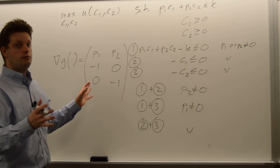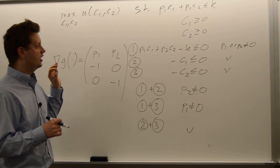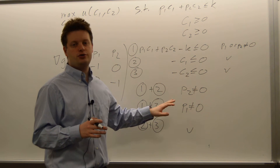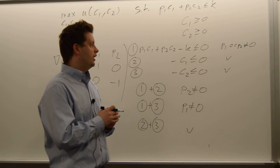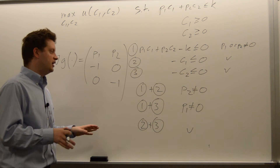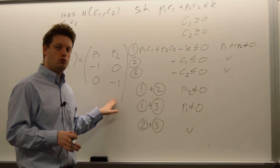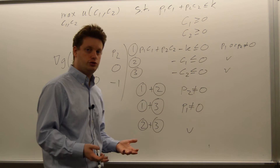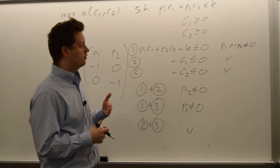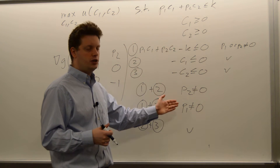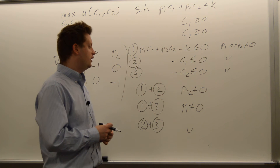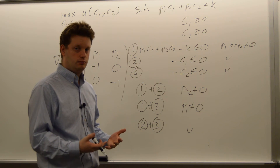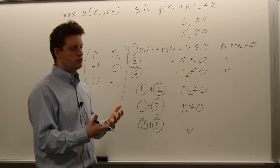Summing up, the constraint qualification holds if neither p1 nor p2 is equal to 0 — those are the only restrictions needed. If the constraint qualification does not hold, for example if p1 = 0, then we would need to check those points separately, as they might be restrictions that cannot be found via the standard first-order conditions.